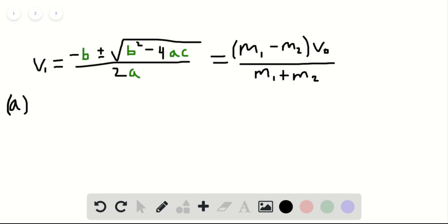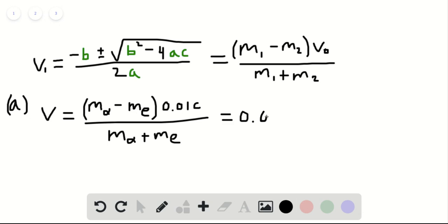So what we have here is V is equal to M alpha minus M electron multiplied by our value V0, which we're told is 0.01C, so this is 0.01 times the speed of light, divided by M alpha plus M electron. If you plug those values in and carry out this calculation, you find that this is equal to approximately 0.01 times the speed of light. So it doesn't really change.